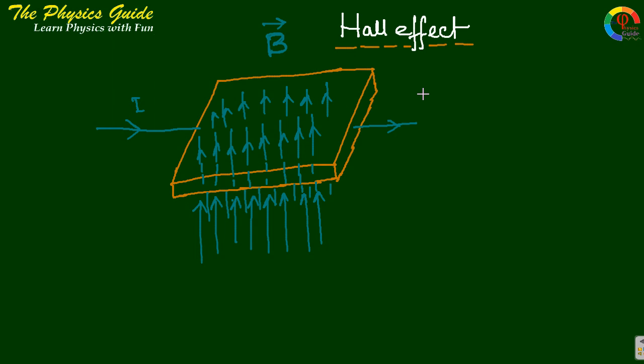Hall effect is the production of a voltage difference across an electrical conductor, transverse to an electric current in the conductor and to an applied magnetic field perpendicular to the current.